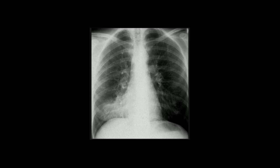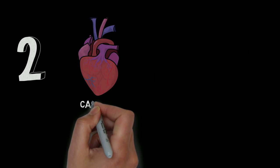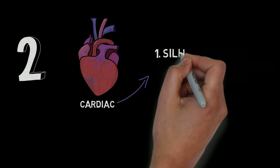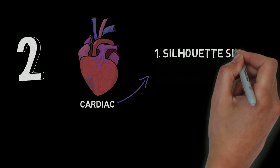Pause now and see if you can identify the abnormalities in this next picture. Hopefully you saw the increased density in what is probably the right middle lobe, but without a lateral x-ray to confirm, it could be the lower lobe. This person has pneumonia.